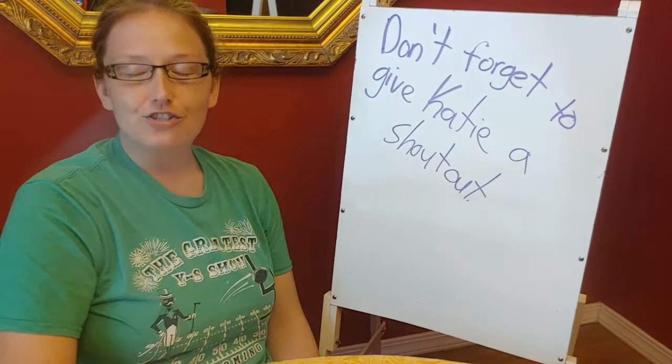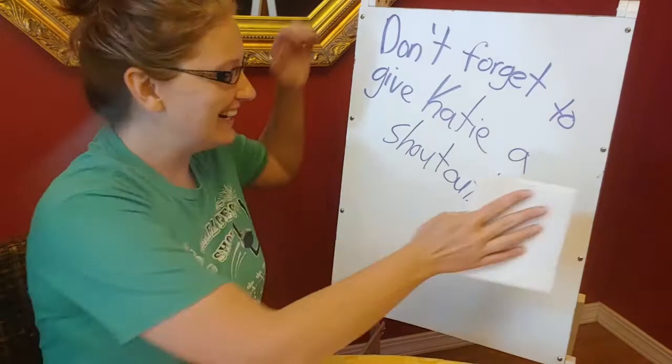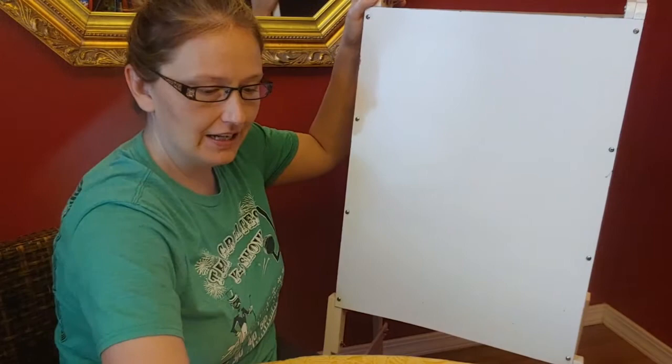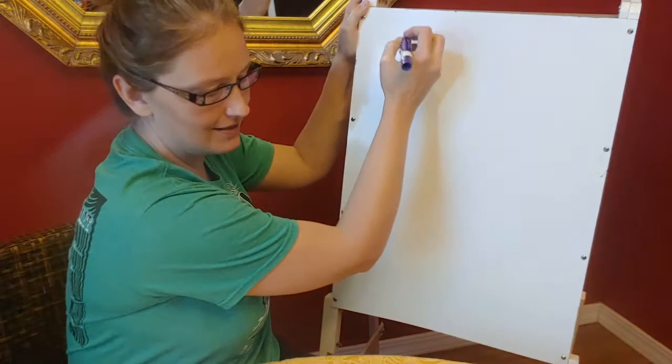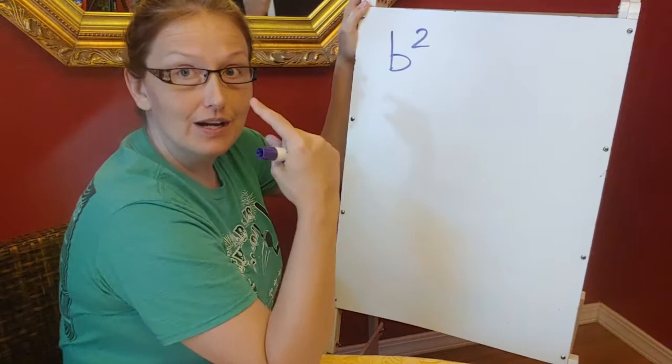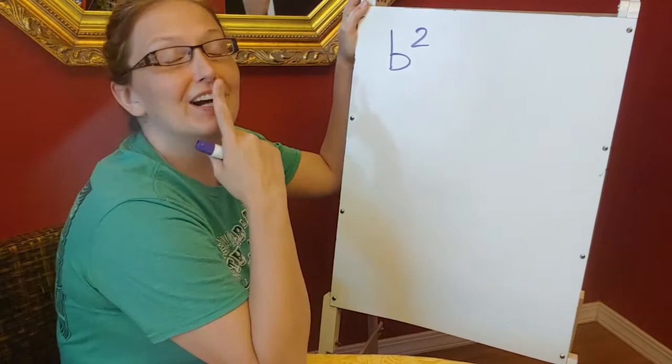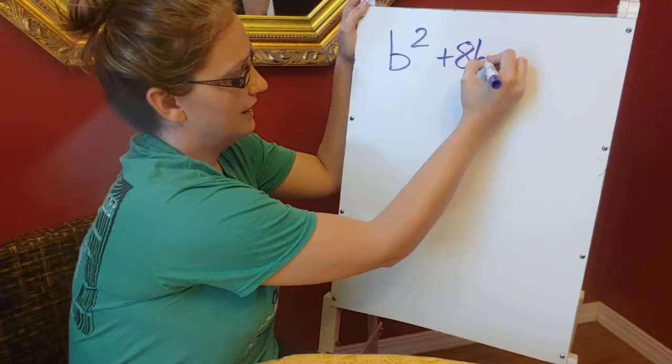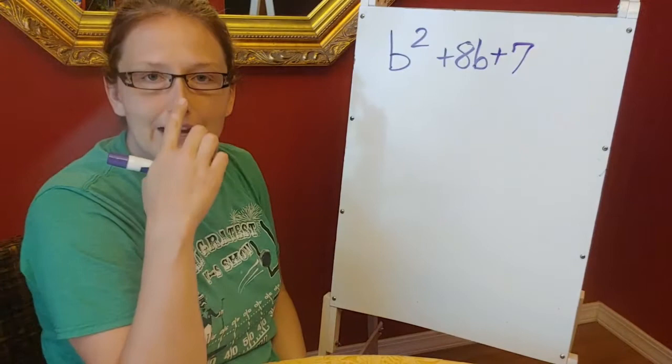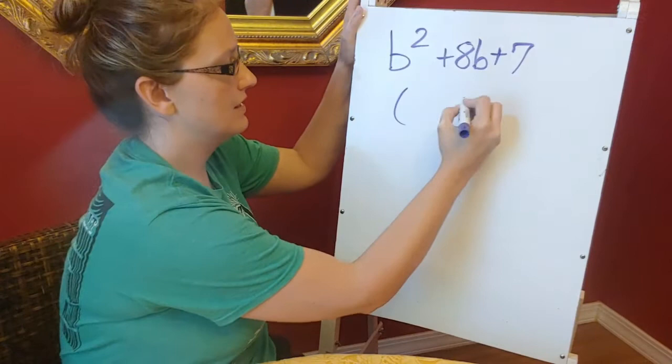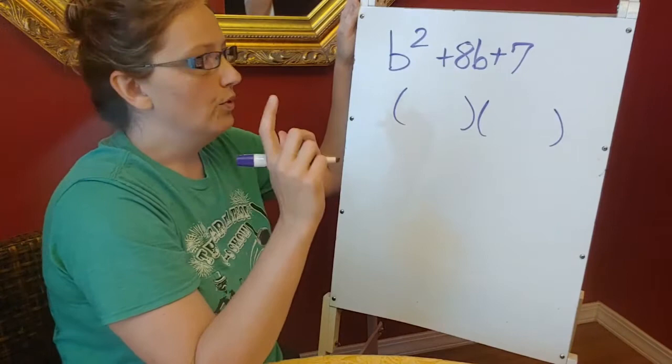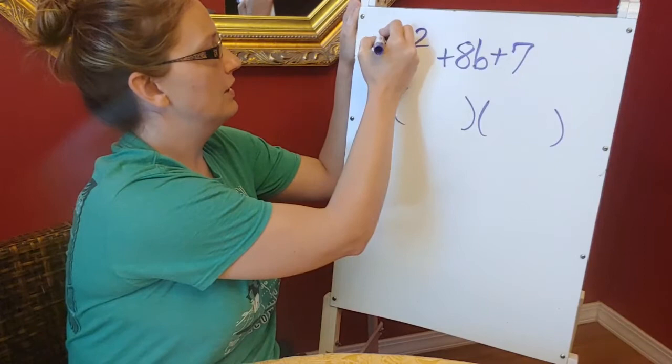All right, so today's AMI for day 14 is all about factoring trinomials. Super exciting stuff! I'm gonna write a trinomial up here. Oh, by the way, yes I do have glasses. These are handy to distract you from the dark circles under my eyes, but also let me read what I have written down on my paper down here a little easier. B² + 8B + 7.